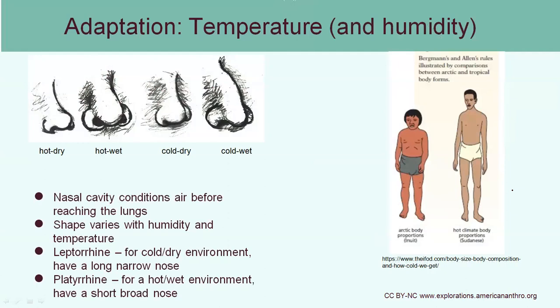Another interesting adaptation specifically for humans is differences in nose shape. For our lungs to function properly, we need to humidify the air before we breathe it in, and we also don't want the air to be too cold. The four nose types in this picture show the difference between those who live in hot versus cold climates and dry versus wet climates. The leptorine nose is more for a cold, dry environment — it has a longer, narrower shape to give enough time for the air to be warmed and humidified before it reaches the lungs. In comparison, the platyrine nose is more common in a hot, wet environment like a tropical setting, where the air is already humid and does not need further humidification.